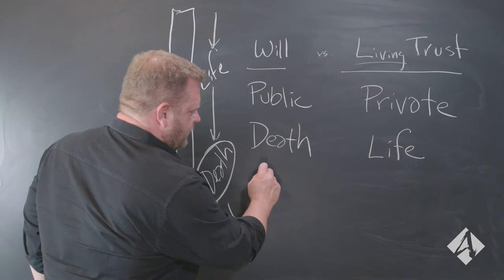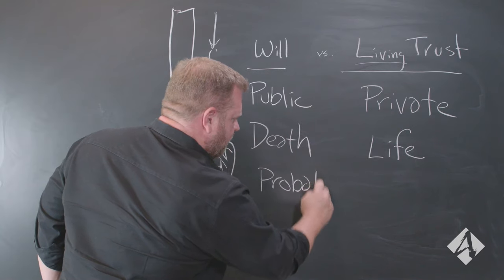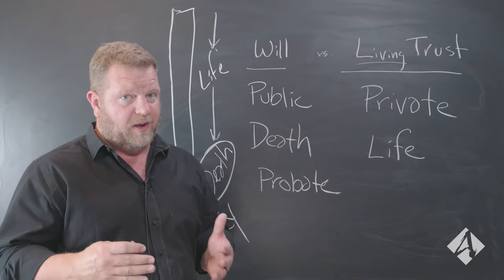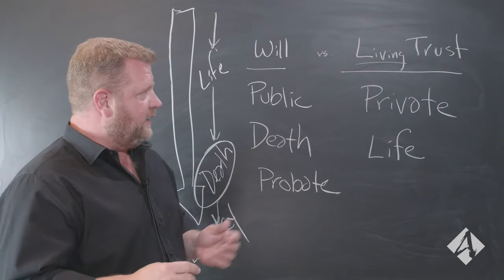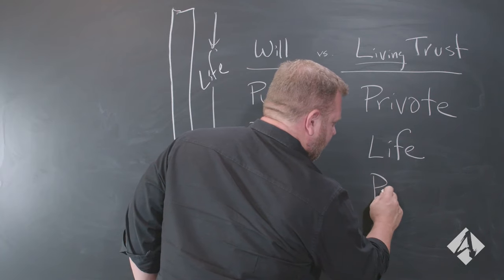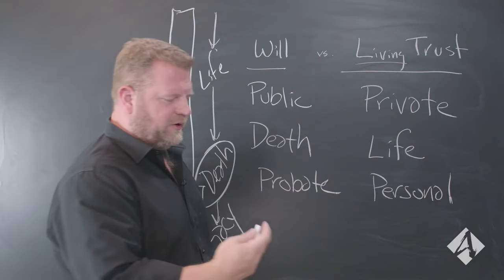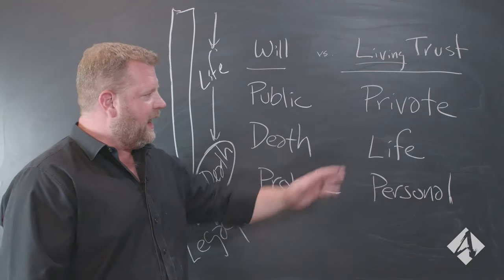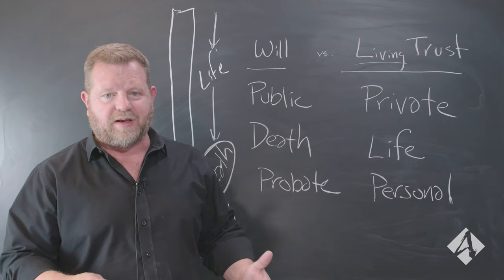A will requires probate — it requires the court process, which is why a lot of people don't like the will. A living trust does not require probate, so it's personal. Your family is just taking care of it. You don't have to go through a court; we're not asking a judge to distribute assets.